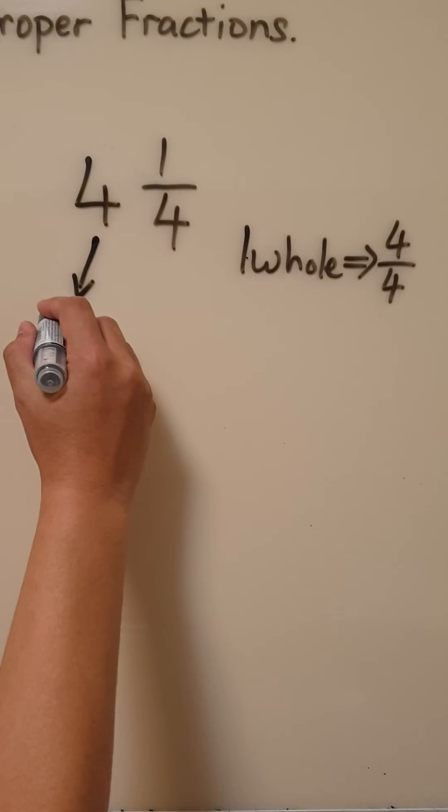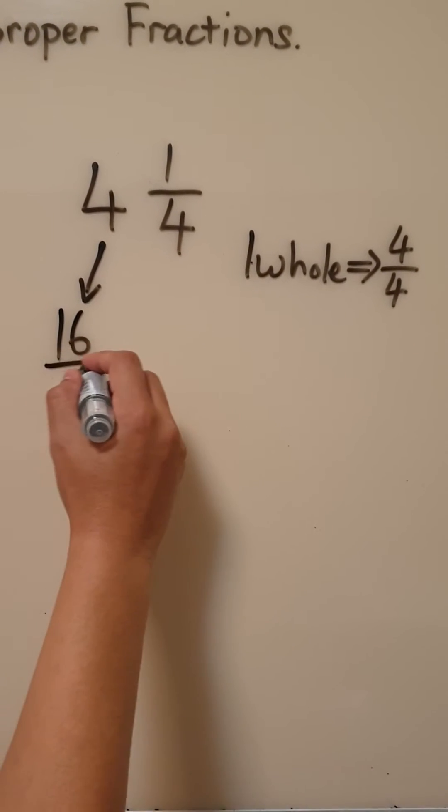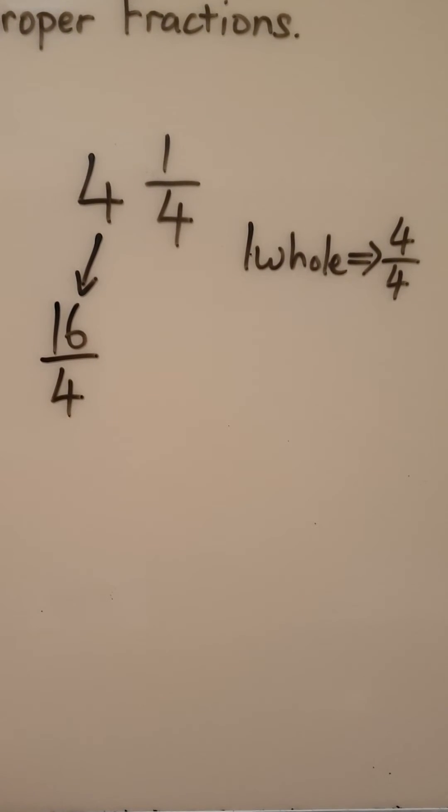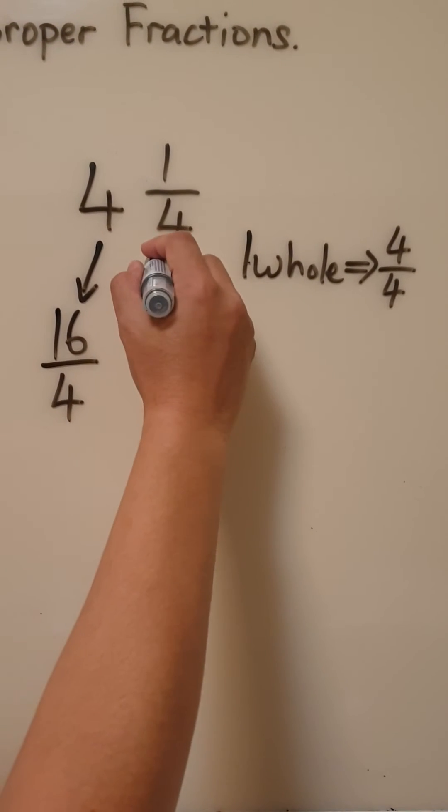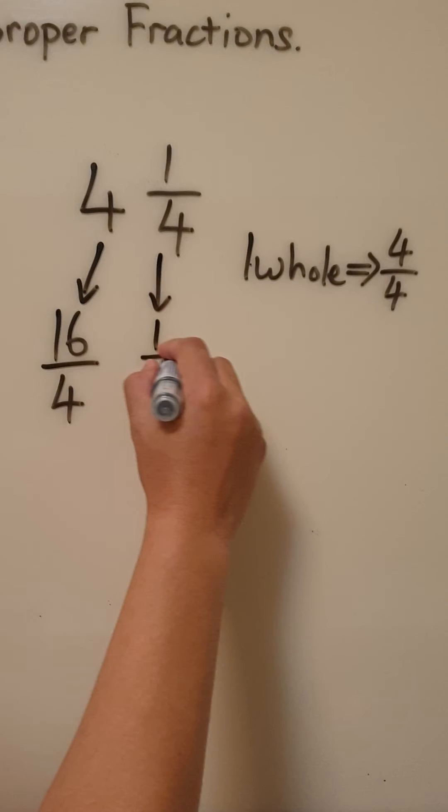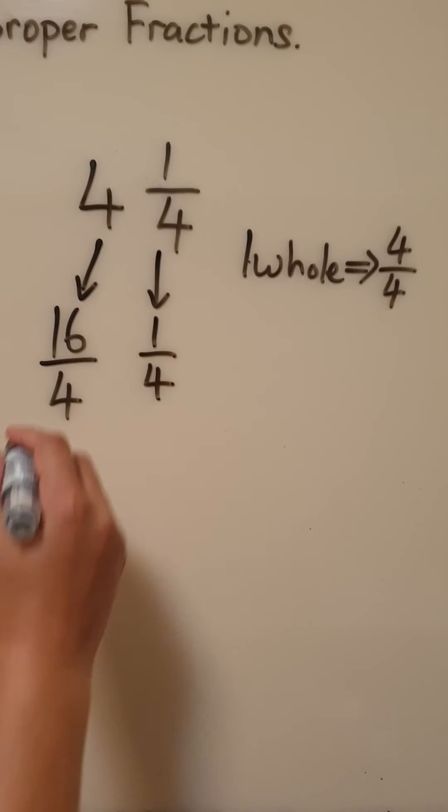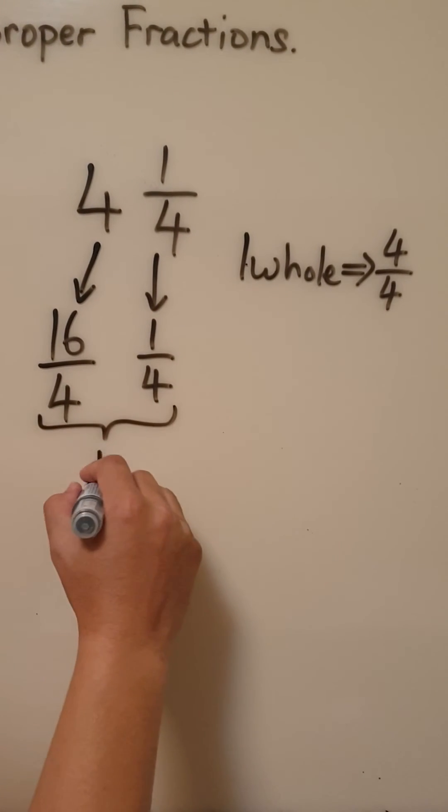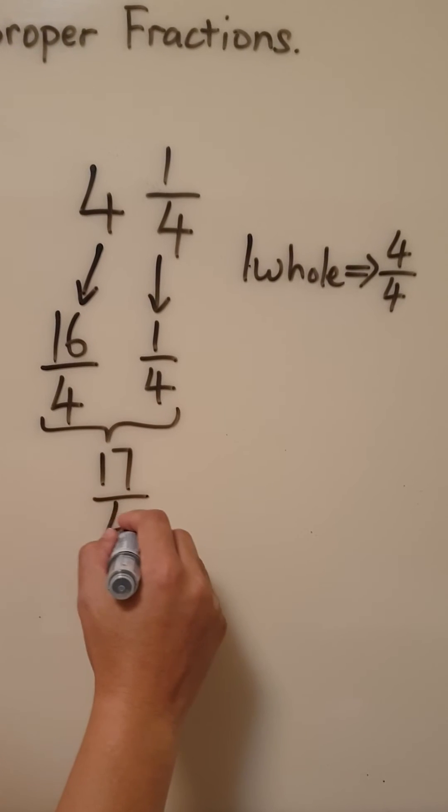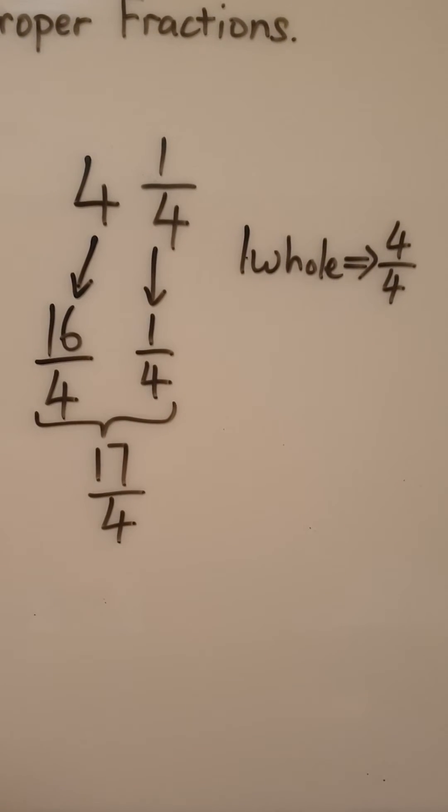Sixteen quarters or sixteen out of four. We already have one quarter or one out of four. This gives us a total of seventeen quarters or seventeen out of four.